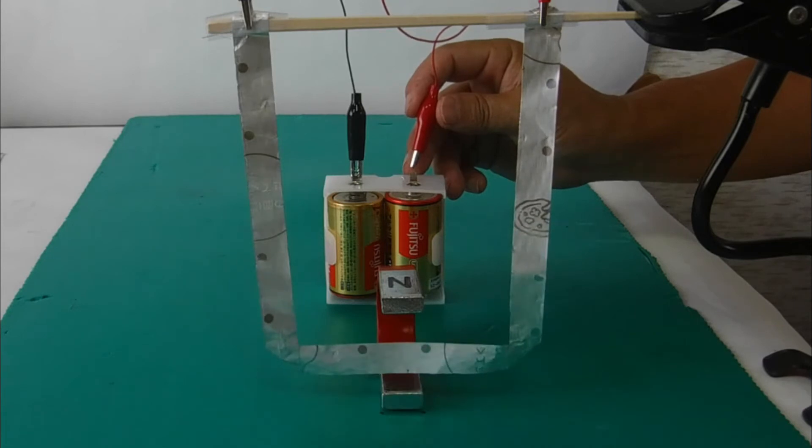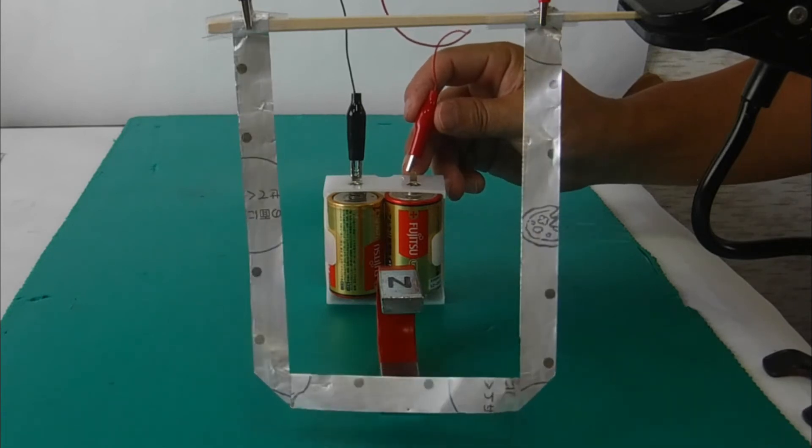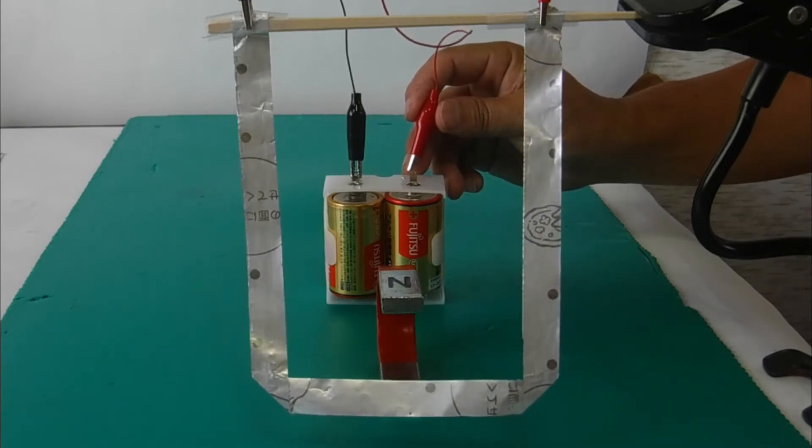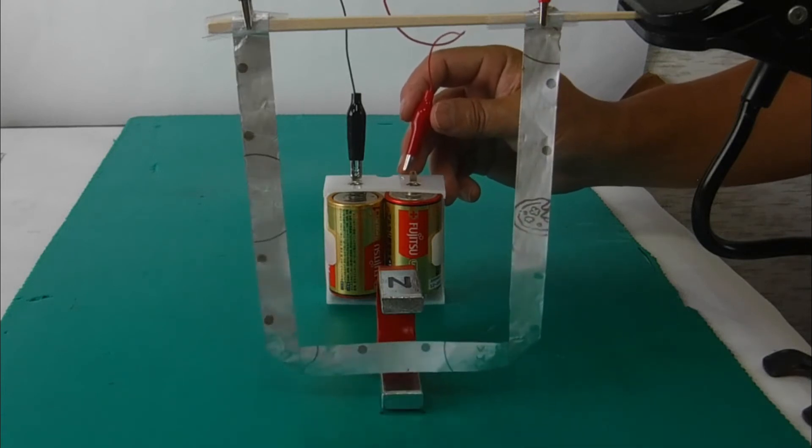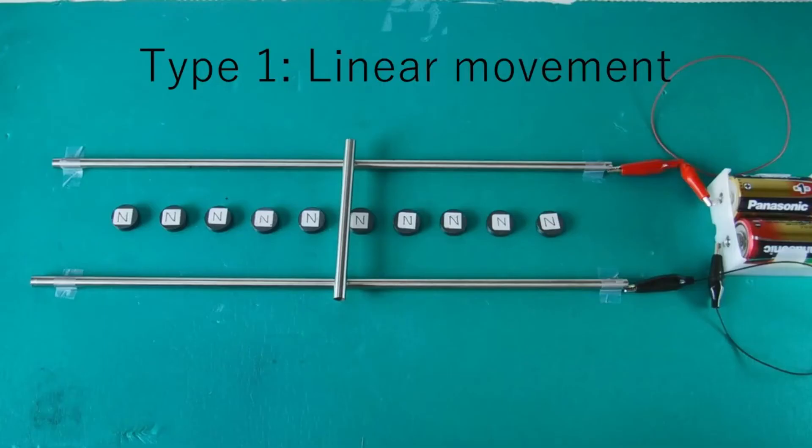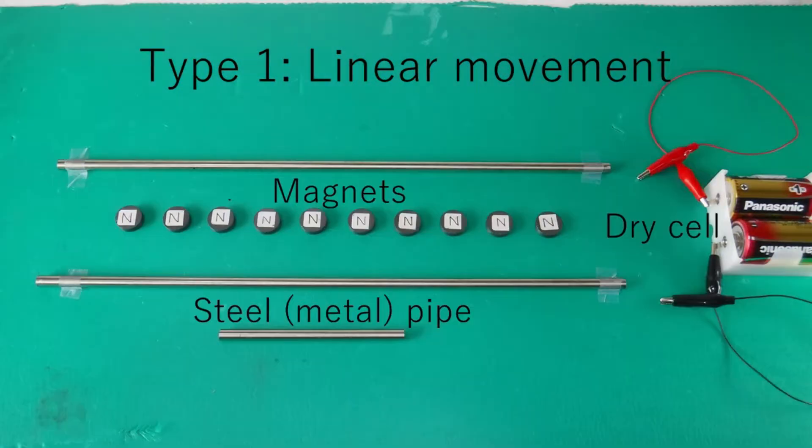The magnetic force acts between the magnet and the electric car. First, let's try a model that moves linearly. The materials are steel pipe, dry cell, and a magnet.